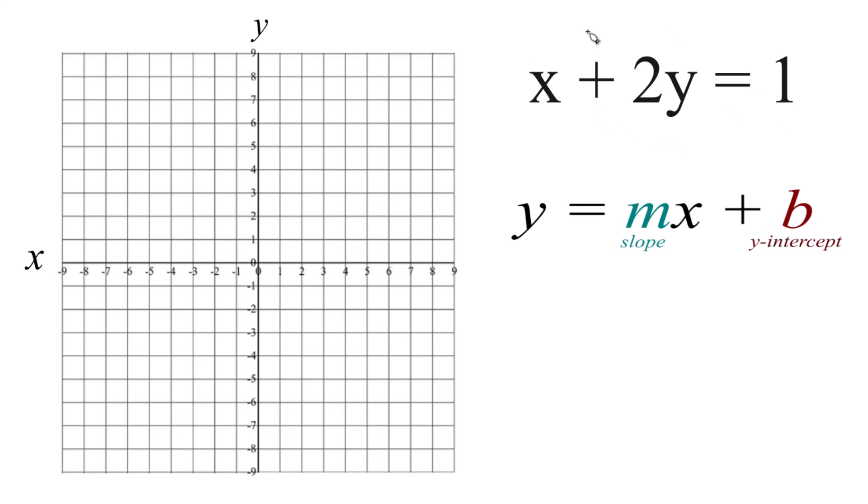What we need to do is organize this x plus 2y equals 1 into slope-intercept form. So I'm going to subtract x from both sides. So these x's are gone and we end up with 2y equals 1 minus x.